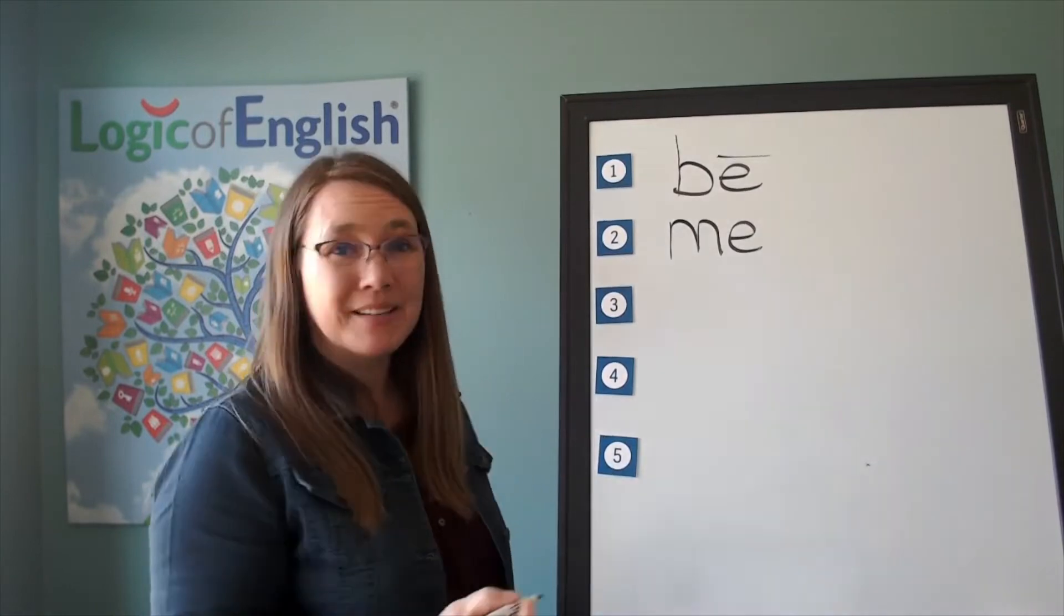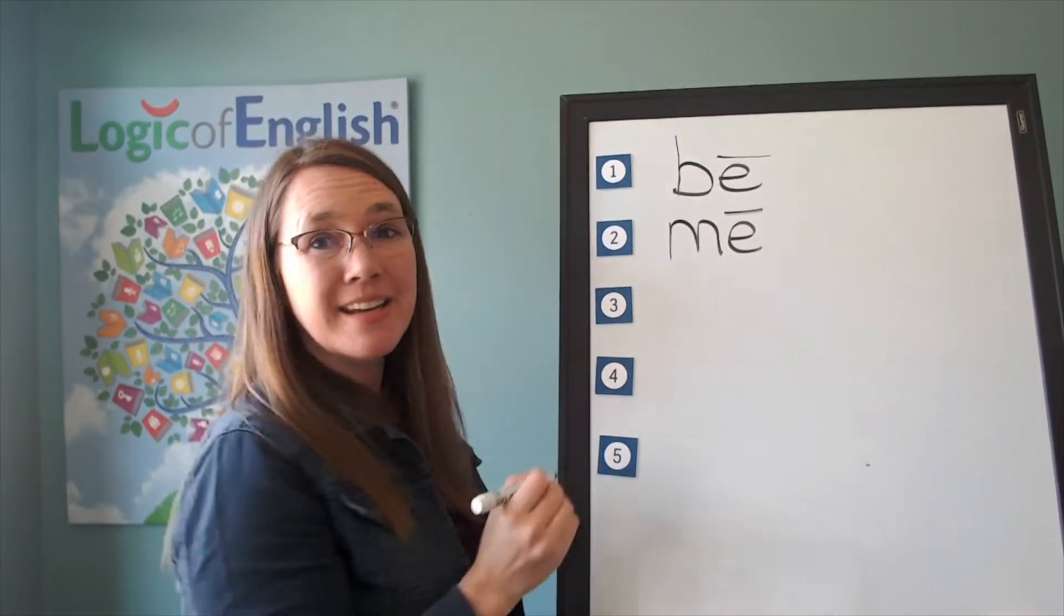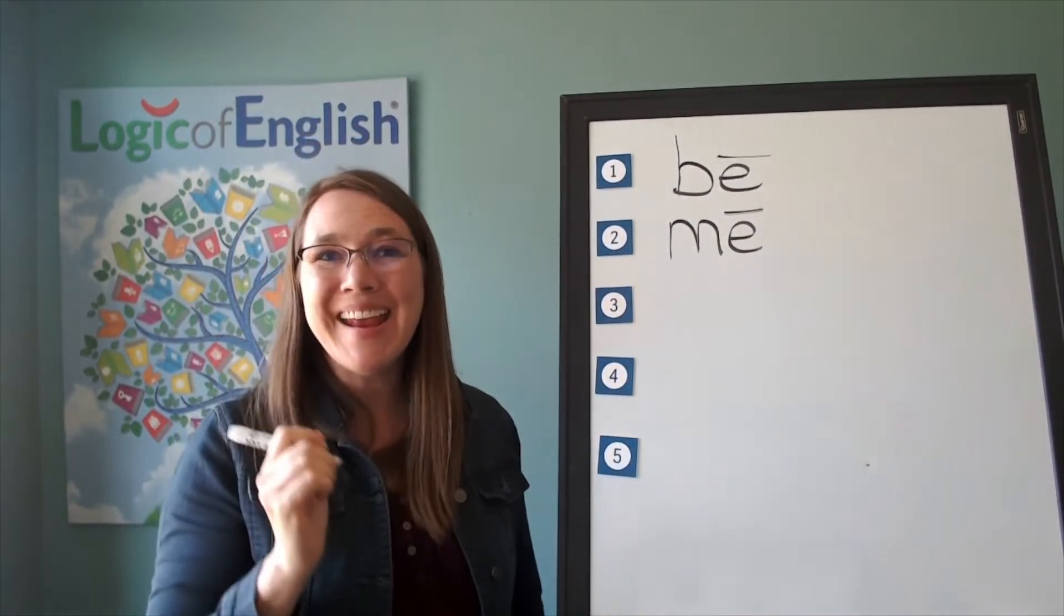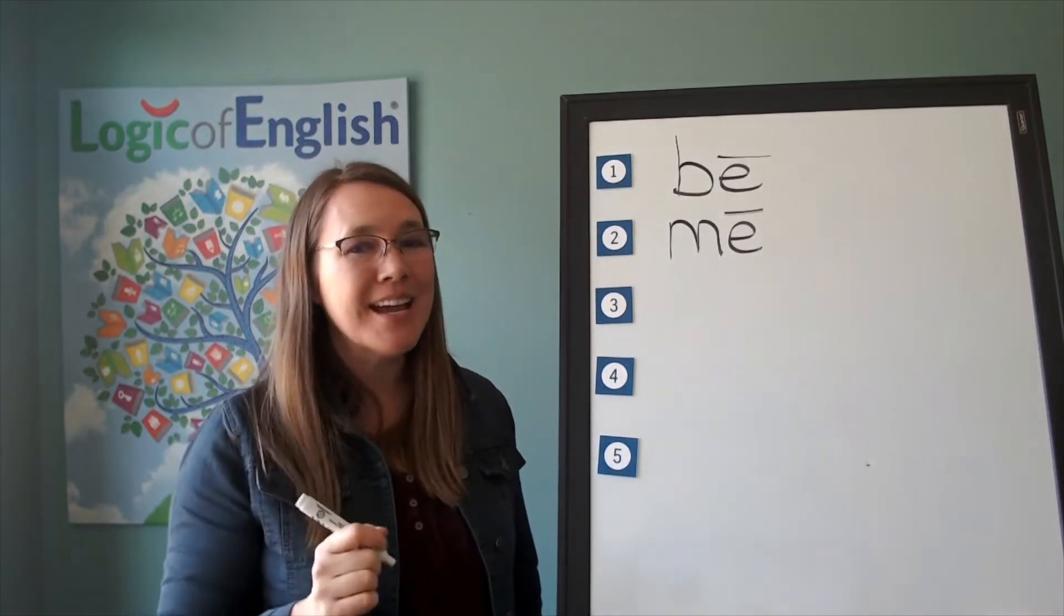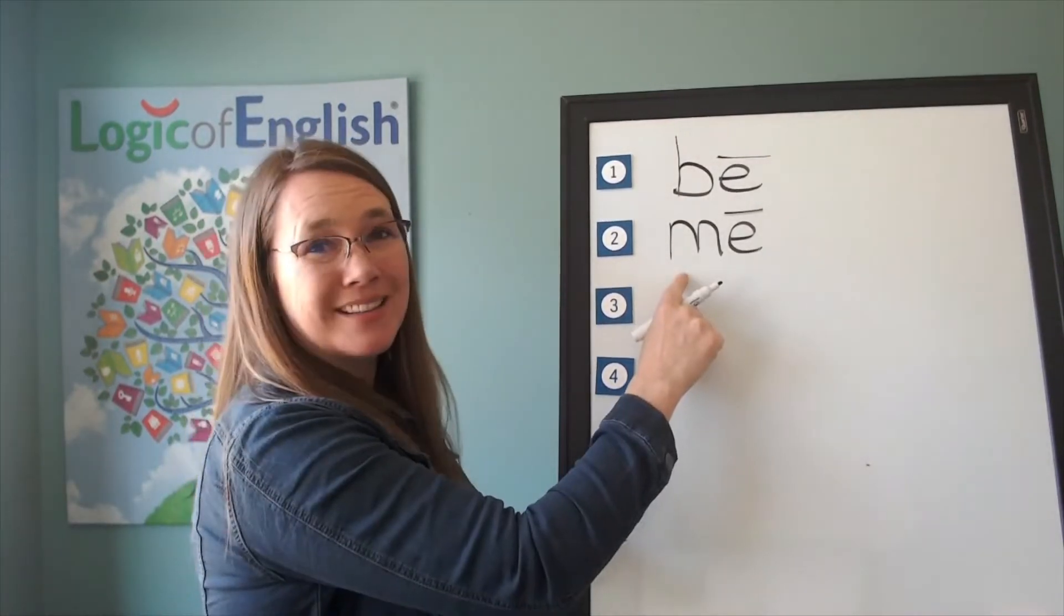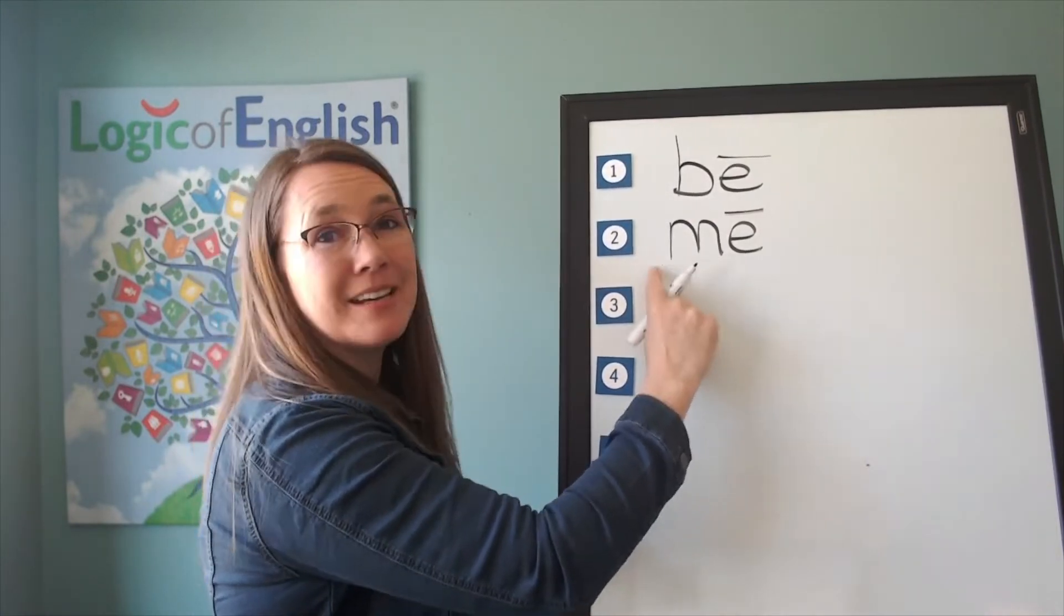How do we mark it? We'll put a line over the E. Why? A-E-O-U usually say their long sounds at the end of the syllable. Let's read it. M-E. Me.